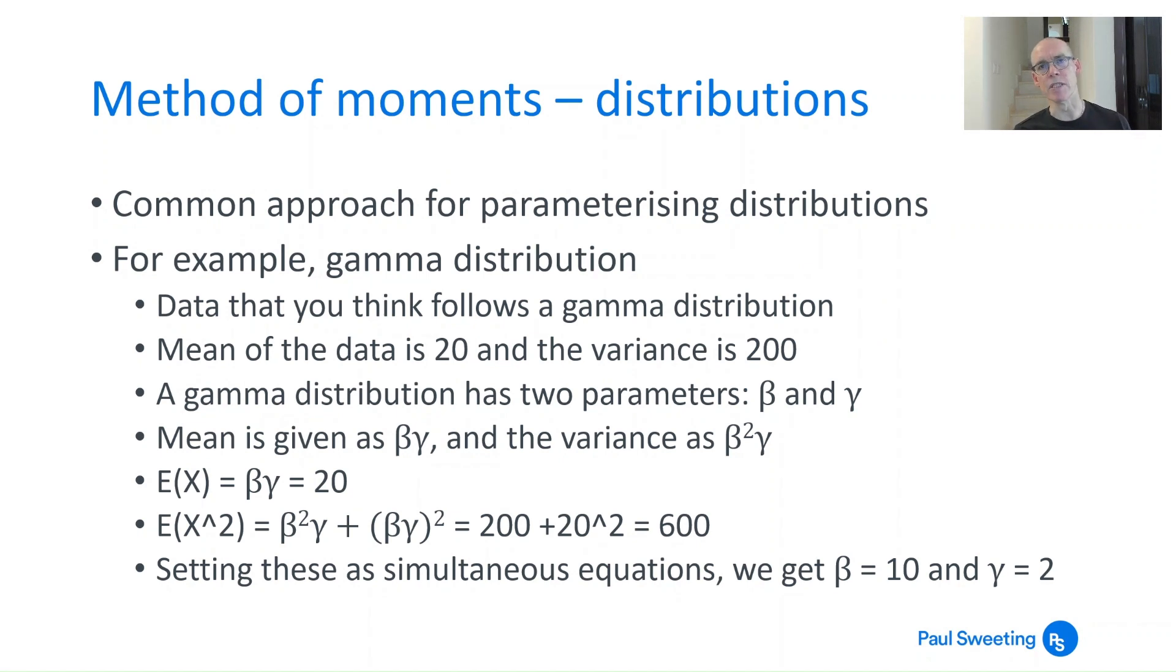The method of moments for distributions, let's just go back and use this as an example. It's a common approach for parameterising distributions. A simple example here is the gamma distribution. Say you've got some data which you think follows a gamma distribution. You know that the mean of that data is 20, the variance is 200. The gamma distribution in the parameterisation we're using has a couple of parameters, beta and gamma. You know that the mean is beta gamma and the variance is beta squared gamma.